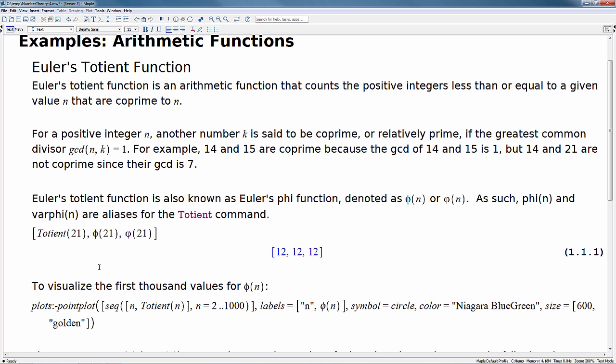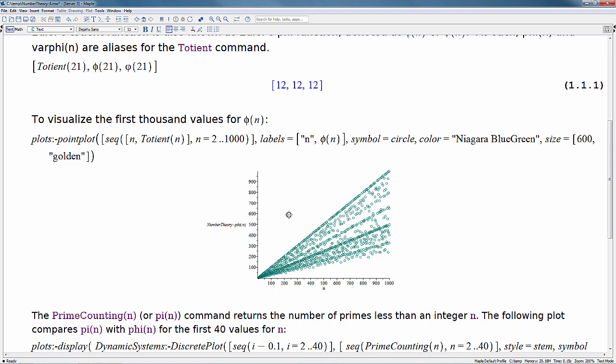Now to visualize this, this becomes something we can visualize pretty easily with a point plot. We can create a sequence here of n versus totient of n for values say between 2 and 1000. So if I run this, I can see here this is all the values here for the first thousand values of the totient function of n.